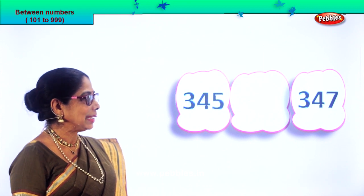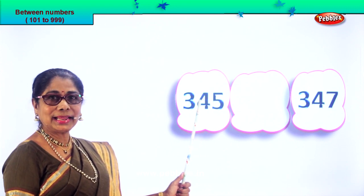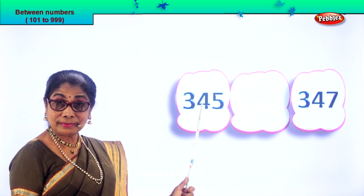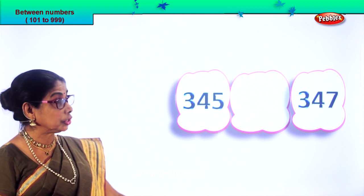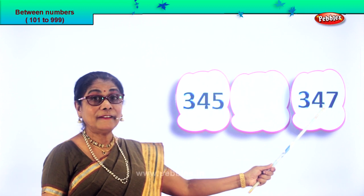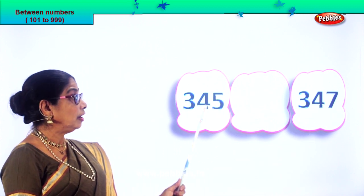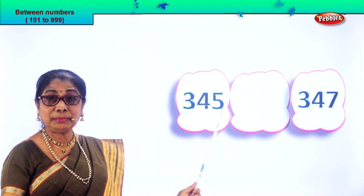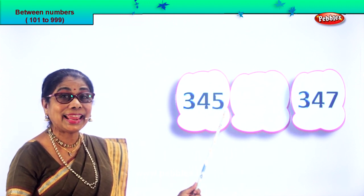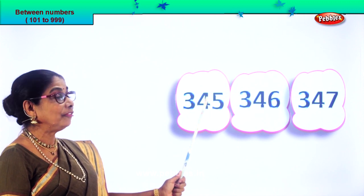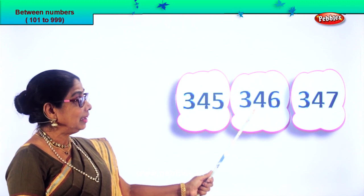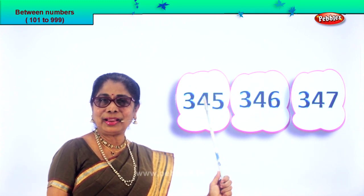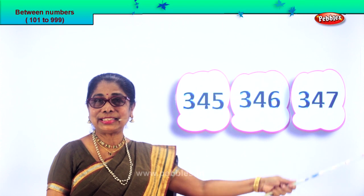Let's take another set of numbers. Here we have 345 and 347. After 45 comes 46. So 345, 346, 347.